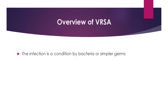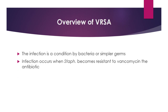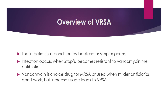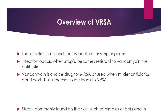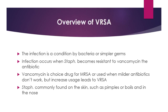The overview of VRSA: a staph infection is a condition caused by bacteria or germs. The infection occurs when staph becomes resistant to vancomycin, a very strong antibiotic. Vancomycin is the drug of choice for MRSA and is also used when other antibiotics are not working. But increased usage leads to patients developing a diagnosis of VRSA. Staph can commonly be found in the skin — as simple as a pimple or something larger like a boil — and also in the nose.